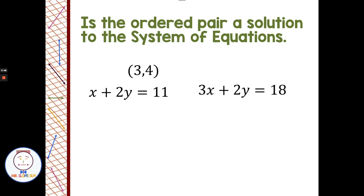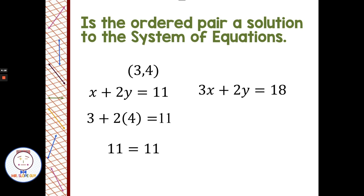New problem: we have the ordered pair (3, 4) and two new equations. We substitute x = 3 and y = 4 into the first equation: 3 + 2(4) = 11. Remember order of operations — we multiply before we add, so 2 times 4 is 8, plus 3 is 11. So 11 = 11: the ordered pair (3, 4) works in the first equation.